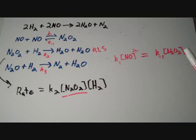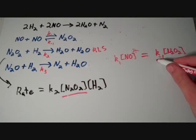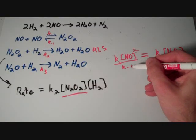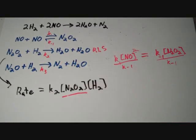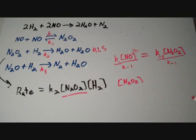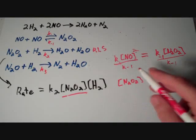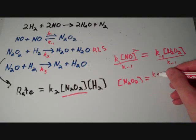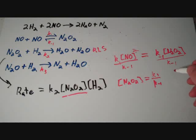So, now what we're going to do is we're just going to solve for the concentration of N2O2 algebraically. So, what we need to do to get N2O2 all by itself is to just divide both sides of the equation by K minus 1. What we'll end up getting is that the concentration of N2O2 is equal to K1 over K minus 1 times the concentration of NO squared.